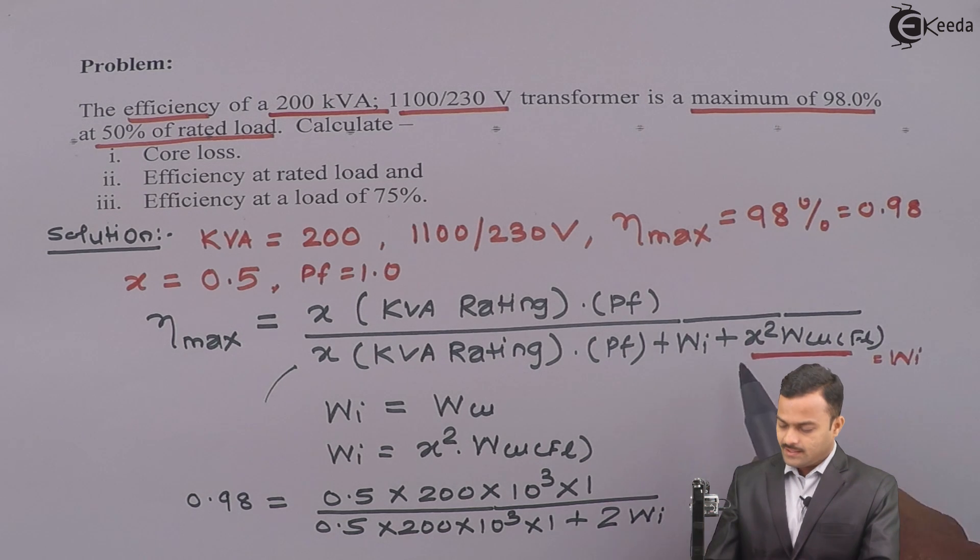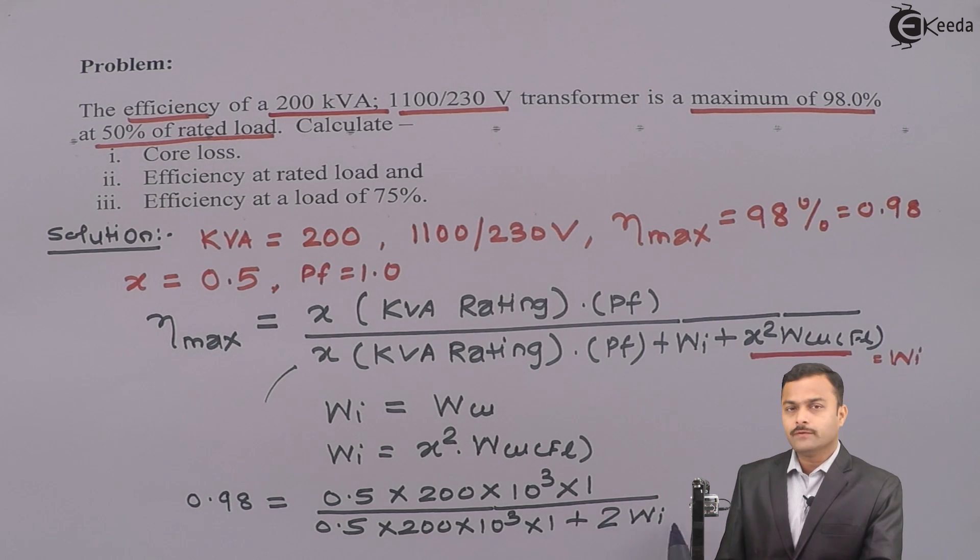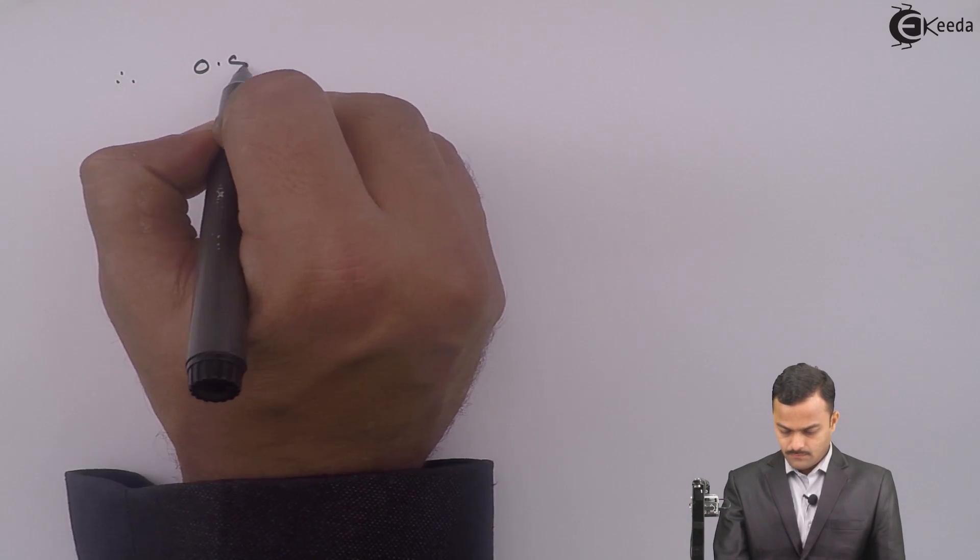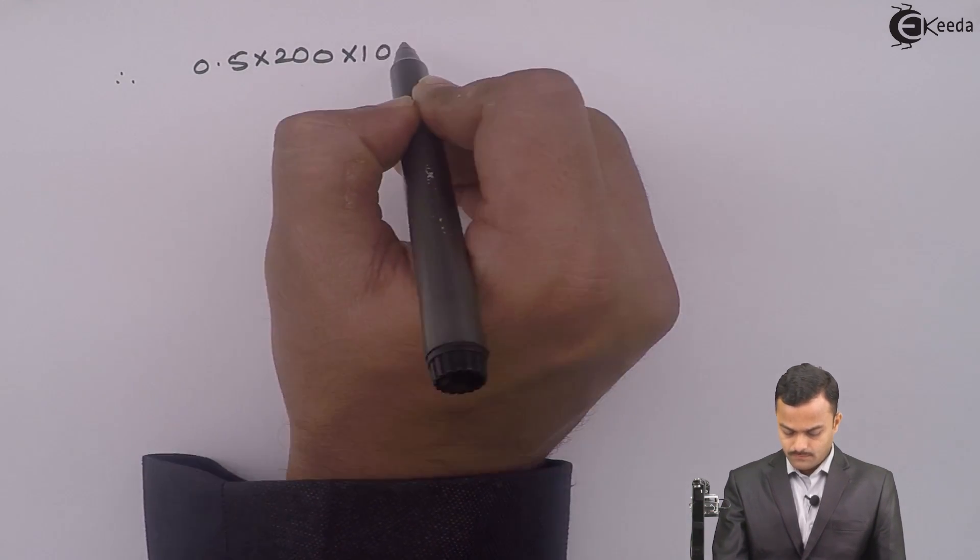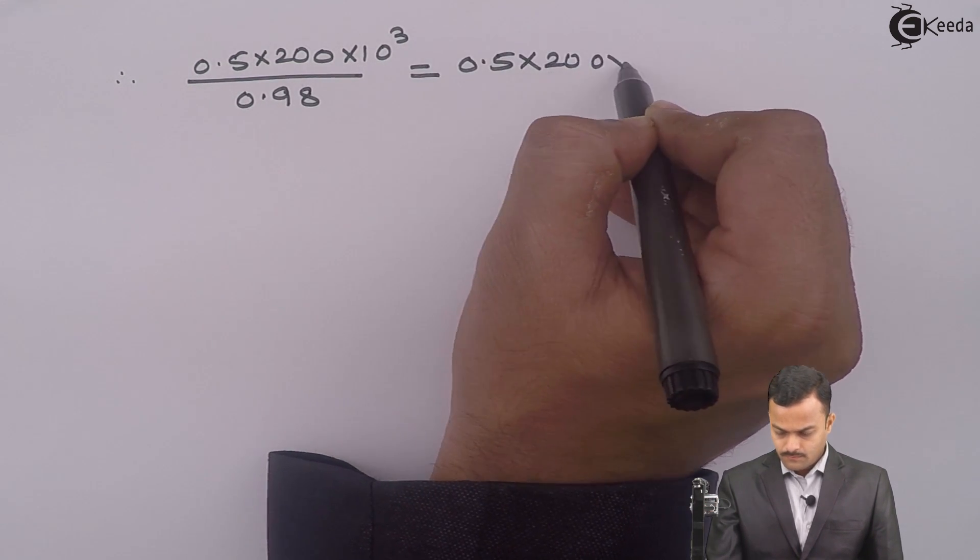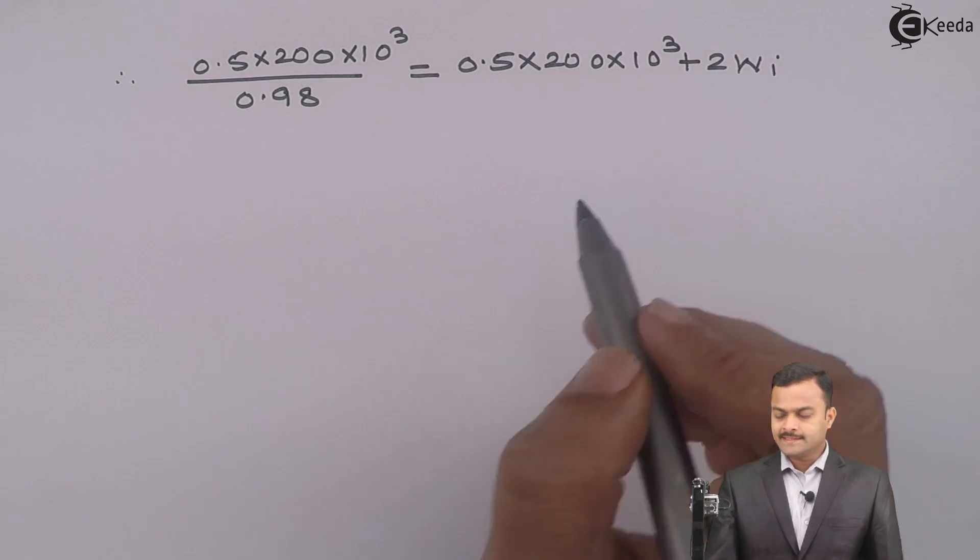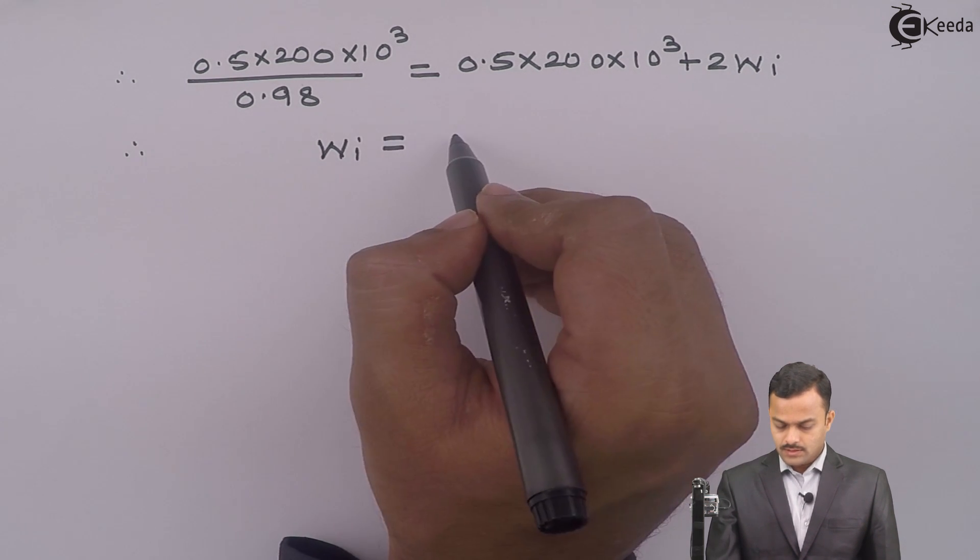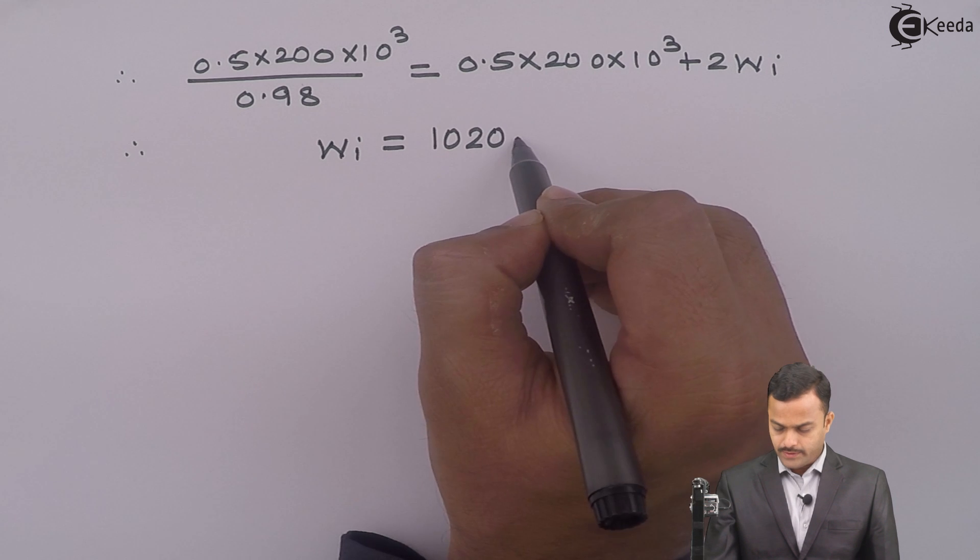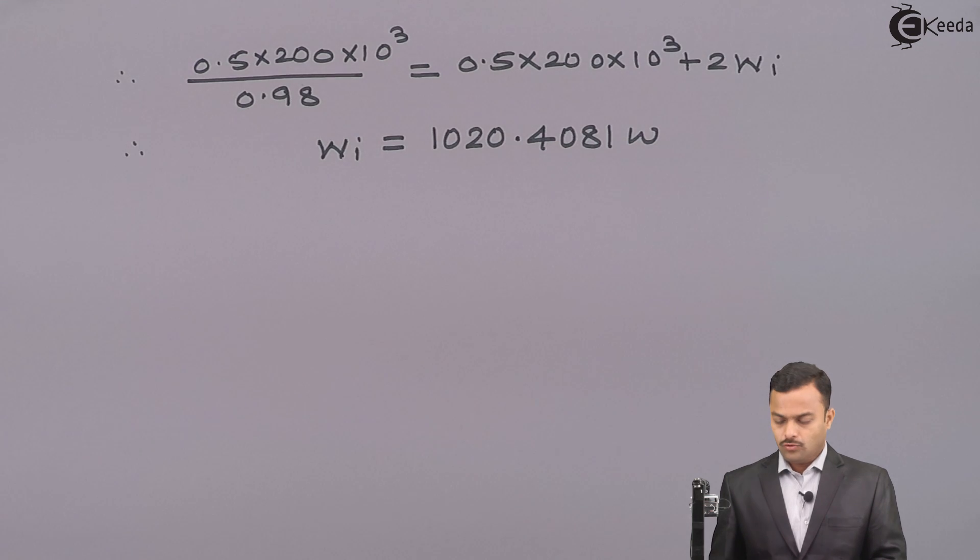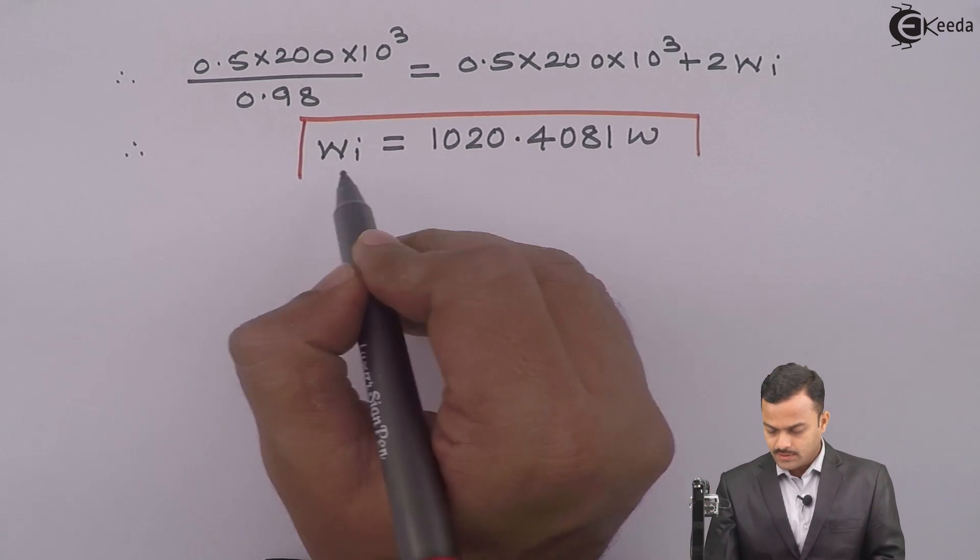So instead of this, I can write it is 2 times WI. What is the advantage? Here, I am having two unknowns, but here I am having only one unknown and that is WI, which is nothing but core loss. So if you simplify this, I will get this expression and WI is nothing but core loss equal to 1020.4081 Watt. So core loss inside a transformer is this.